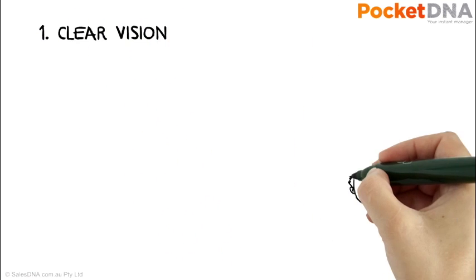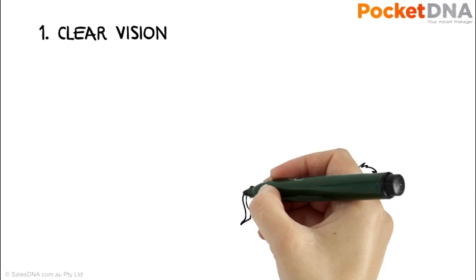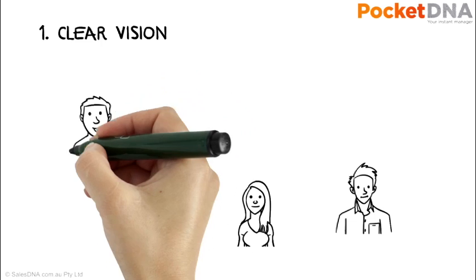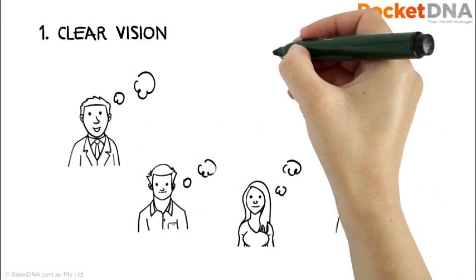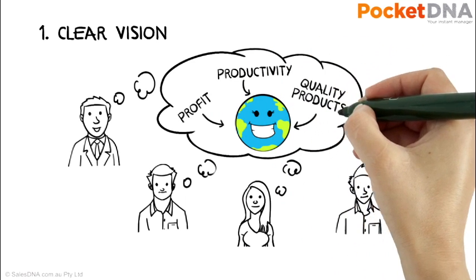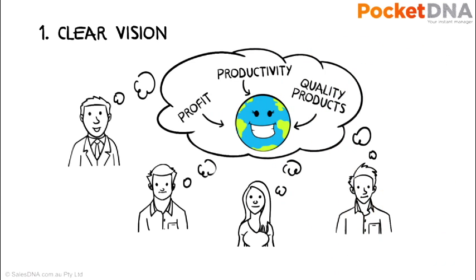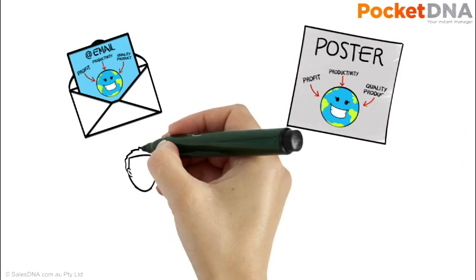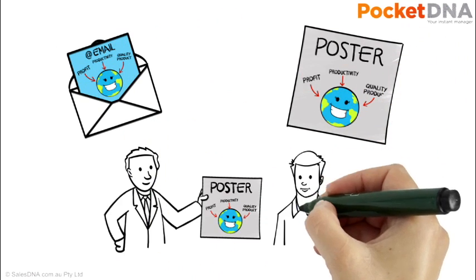It starts with having a clear vision of what you wish the team to achieve. The best way to do this is to involve the team. What vision makes sense for the team, bearing in mind how the team fits into the overall company? This vision is what the team should strive for. There should be constant reminders of this in emails, on posters, at team meetings, and at regular one-on-ones.